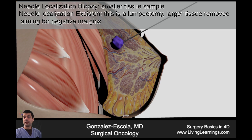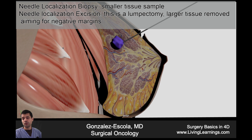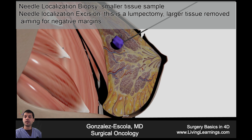This is a needle localization biopsy and therefore the amount of tissue excised is usually less than a needle localization excision. In the excision procedure, you usually have a confirmed malignancy and therefore a negative margin is required. In the biopsy setting, you are aiming to obtain more information to plan your subsequent surgery.